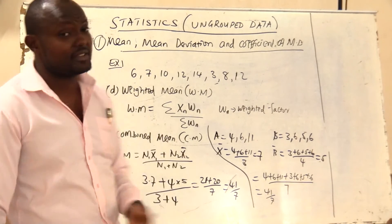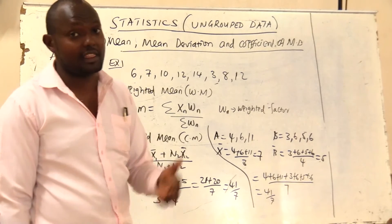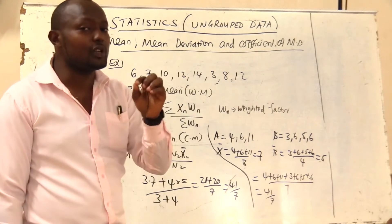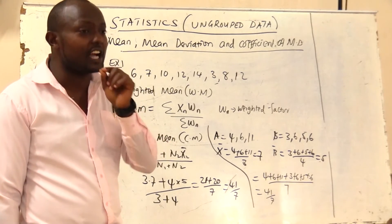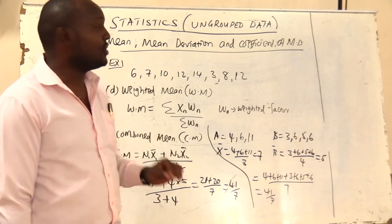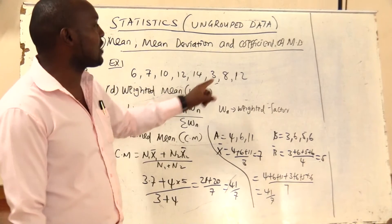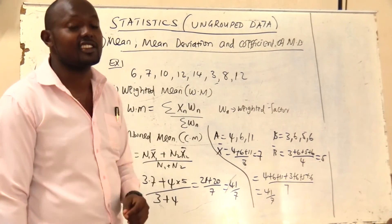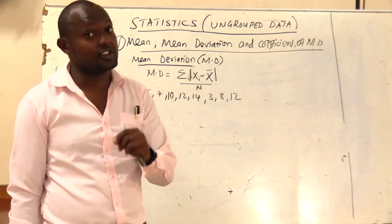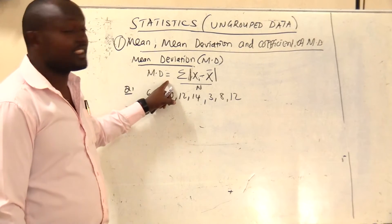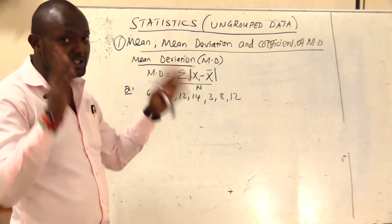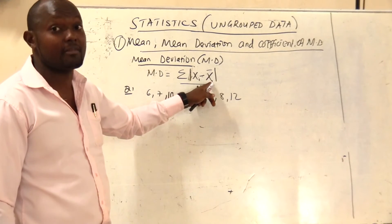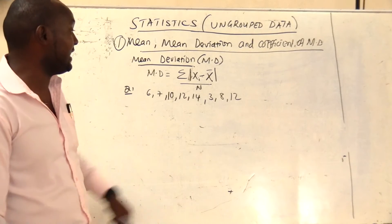Now, majority of students might have some problem with how to calculate the mean deviation and the coefficient of mean deviation. The formula for mean deviation is: MD equals the summation of the absolute value of (xi minus x̄), all over N. Using the same dataset, I have arranged the data in order: 3, 6, 7, 8, 10, 12, 12, 14. We already know the arithmetic mean x̄ equals 72/8 equals 9.